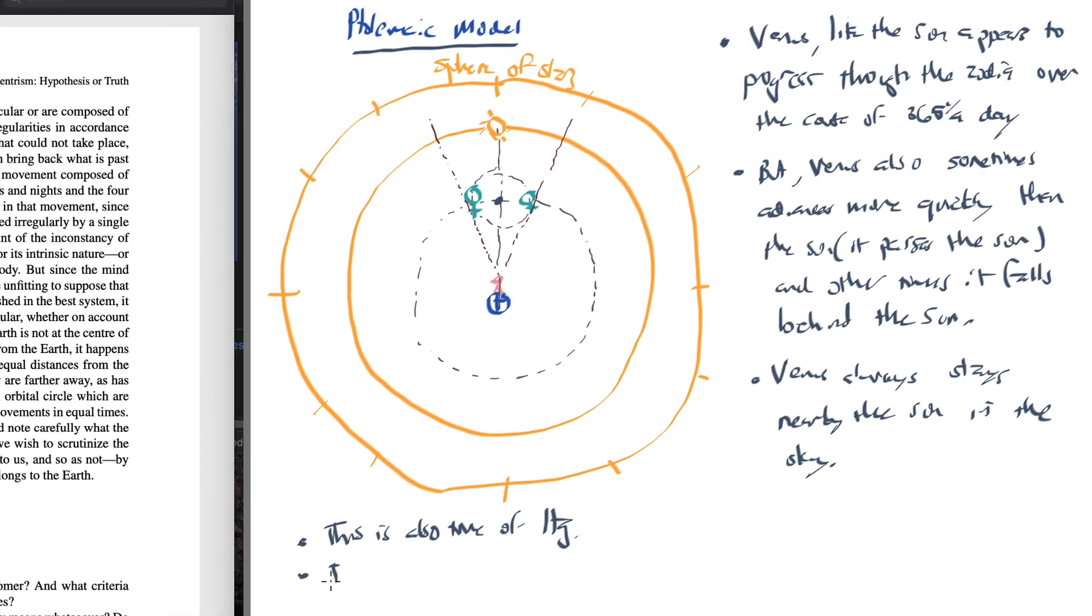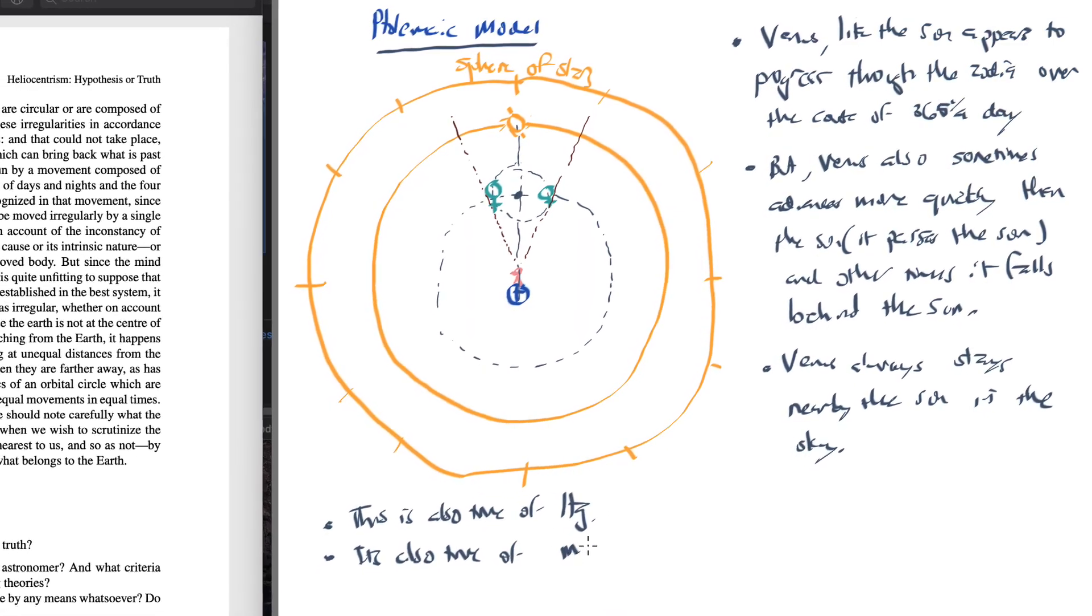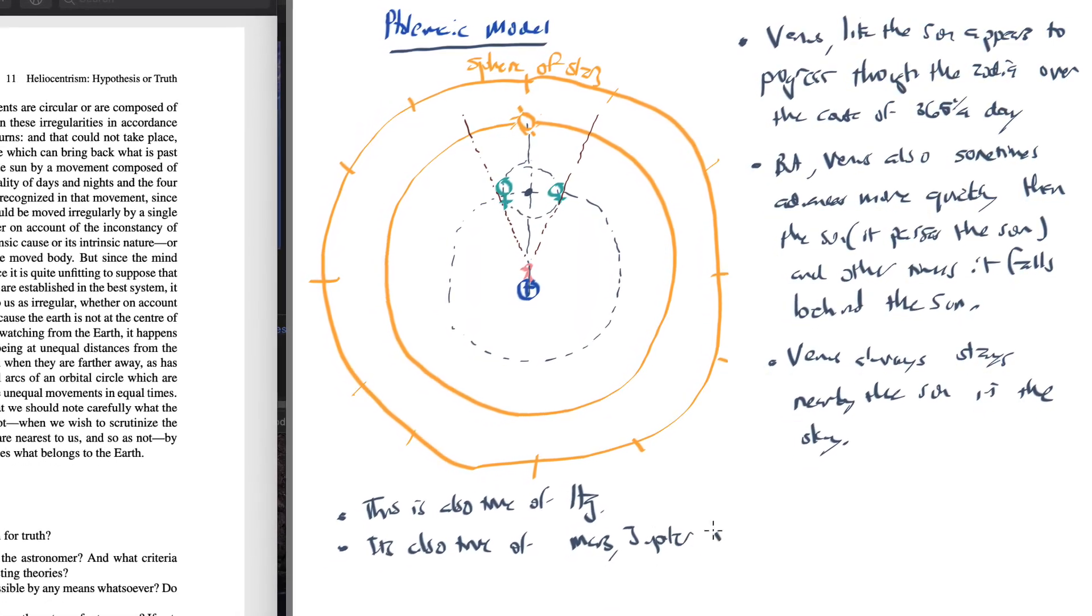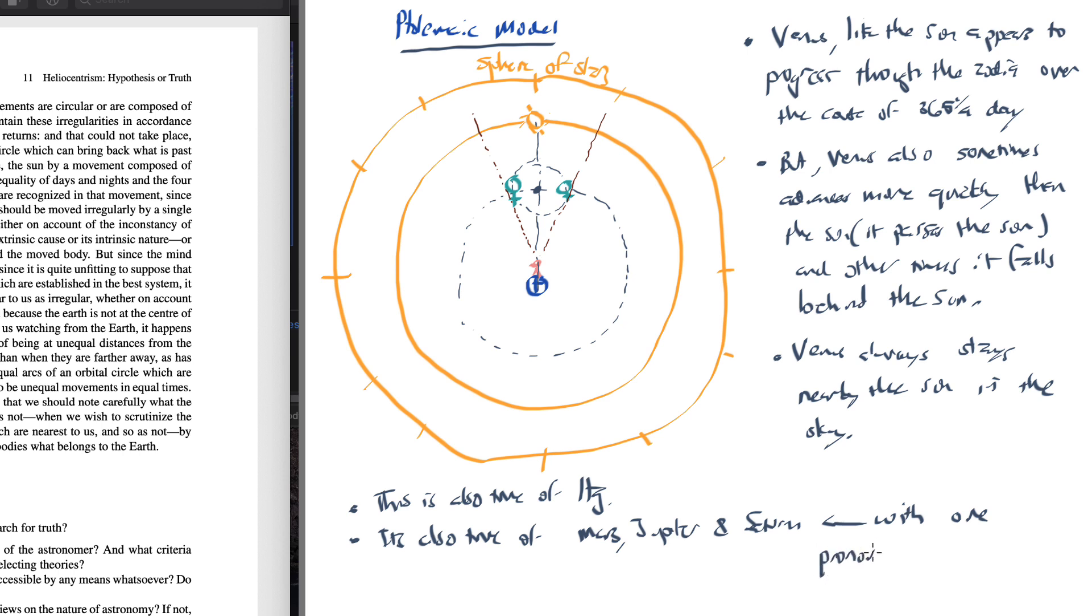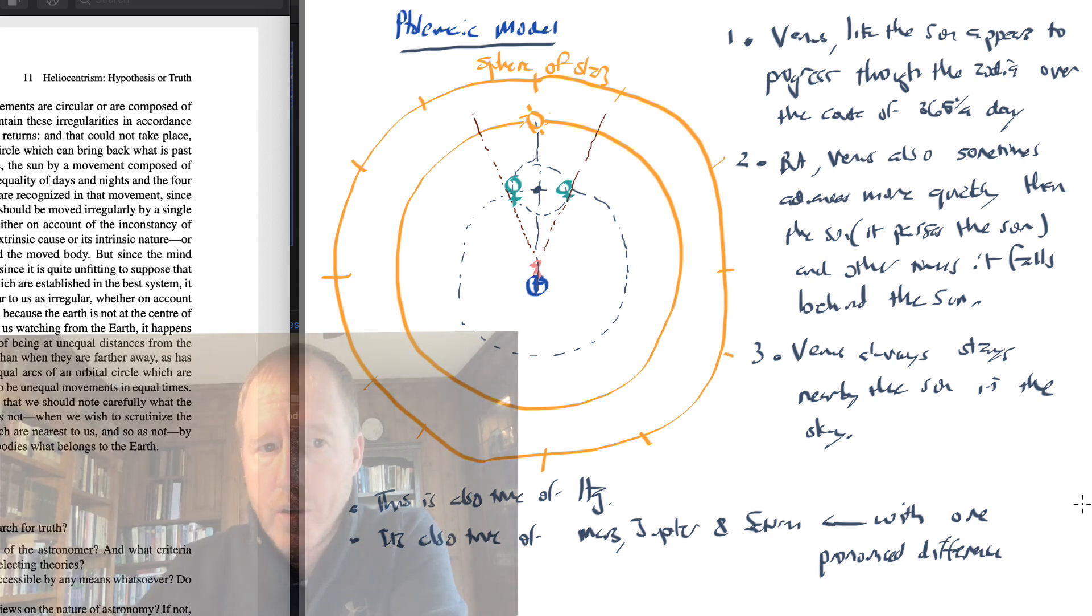And it's also true of Mars, Jupiter, and Saturn. But with these three, with one notable exception, or maybe I'll say one pronounced difference. And that is, while they're sometimes progressing ahead of the sun, sometimes falling behind the sun, the center of their epicycle is not locked to the sun. In other words, for Mars and Jupiter and Saturn, they can be in a completely different part of the sky as the sun. So if I were to label these points 1, 2, and 3, they would sometimes progress more quickly than the sun, sometimes more slowly than the sun. But points 1 and 3 are different for Mars, Jupiter, and Saturn. We'll come back to this again later.